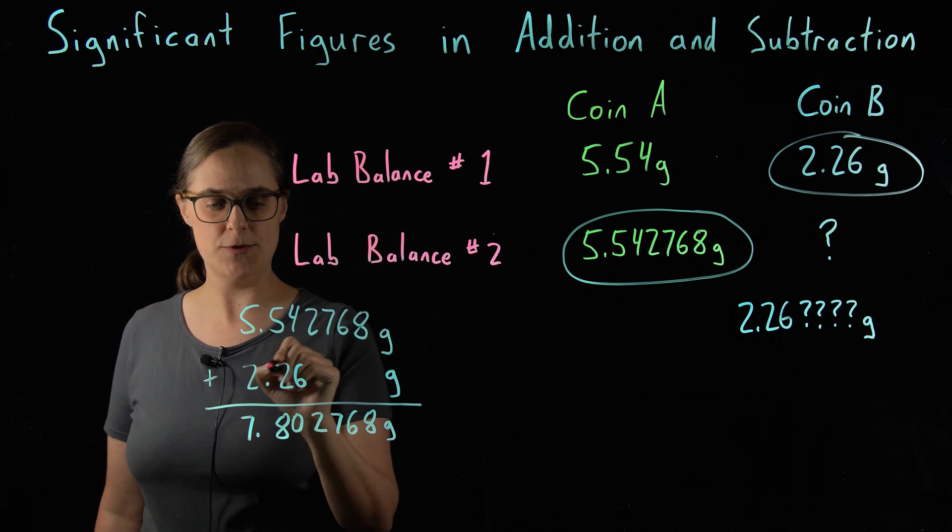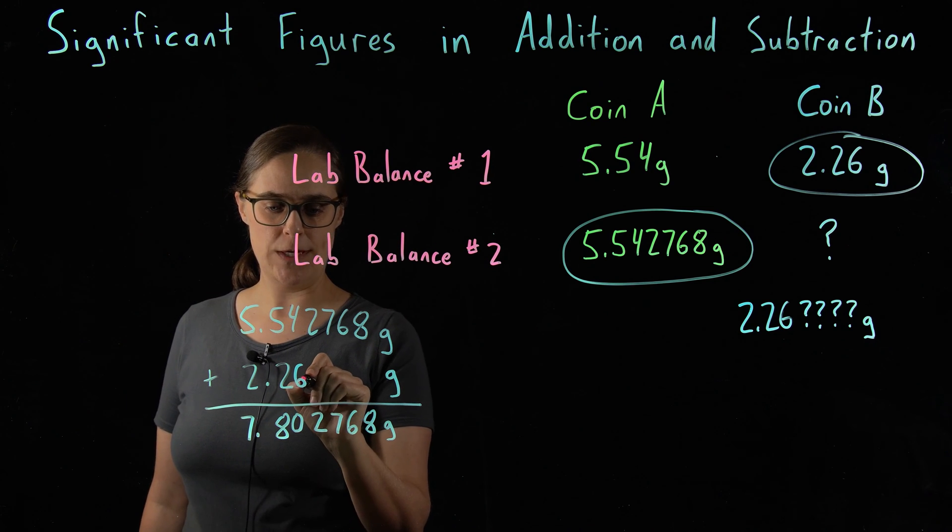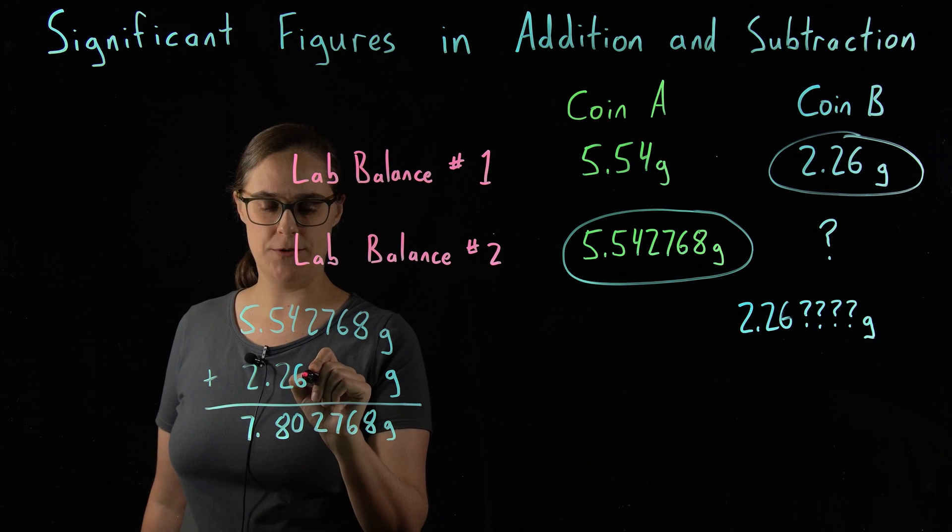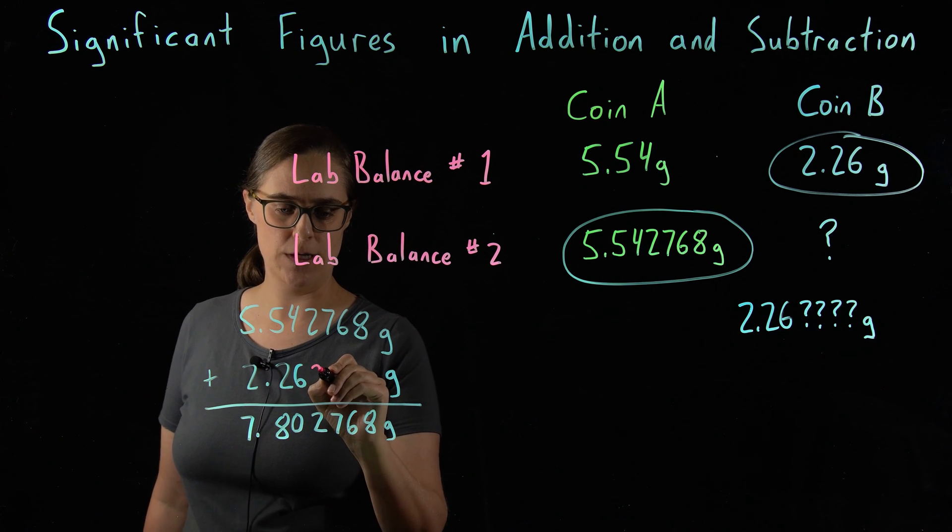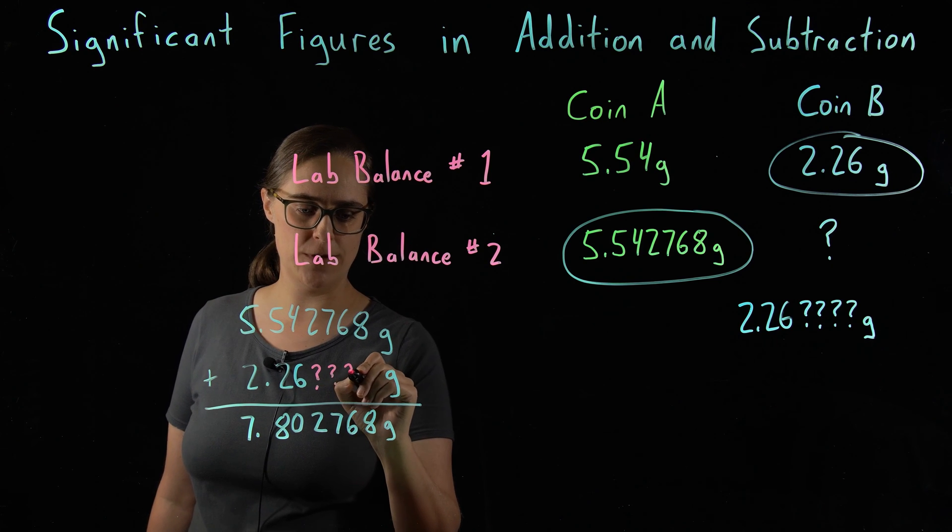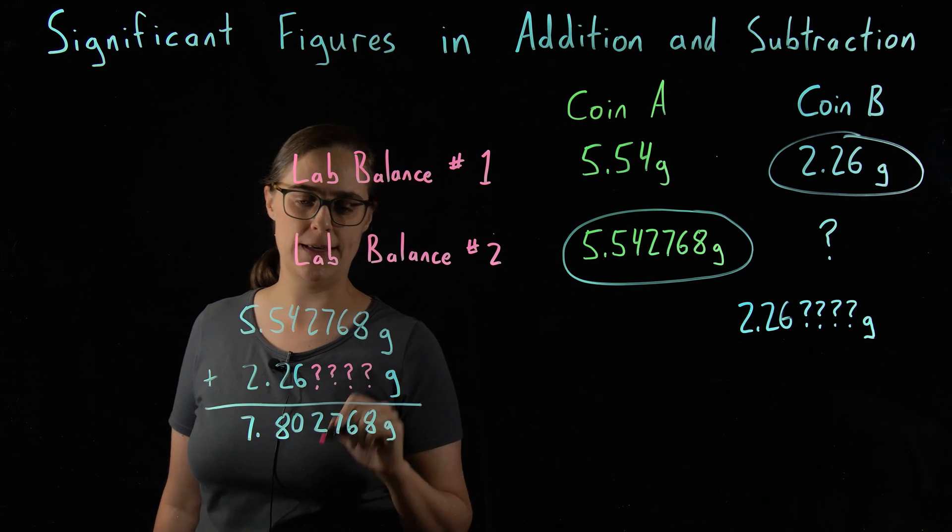Our limit is 2.26 grams. We only know up through this 100th place. We only know two digits after the decimal. We do not know these other four digits that we have for coin A.